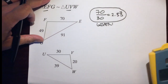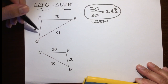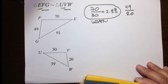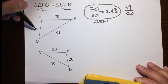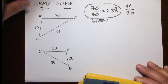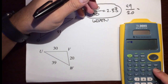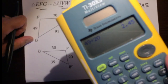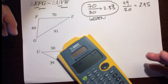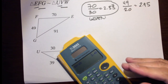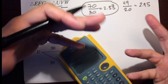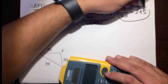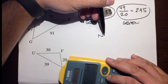Next, FG with VW. FG is 49 over VW, which is 20. Both are the shortest sides of their respective triangles. Using our calculators, 49 divided by 20 is 2.45. Look at that — that's different from 2.3 repeating. So we could just stop right there and say no, because SSS similarity requires all sides to be proportional, meaning equal ratios. These two ratios are not equal, so we can conclude: not similar.